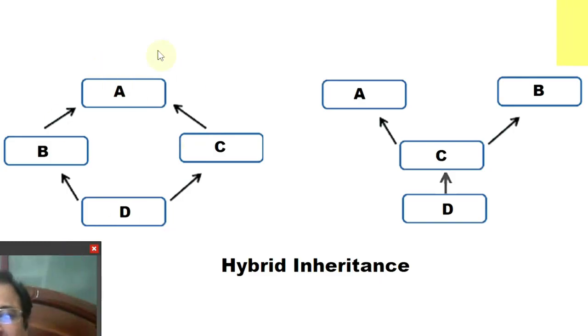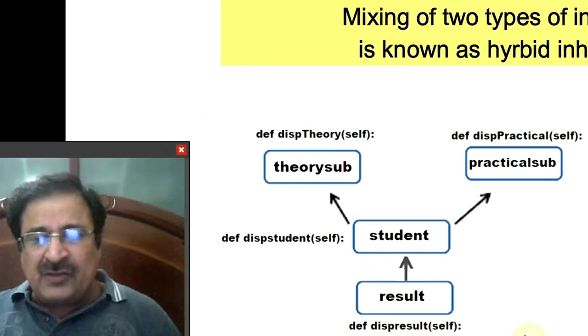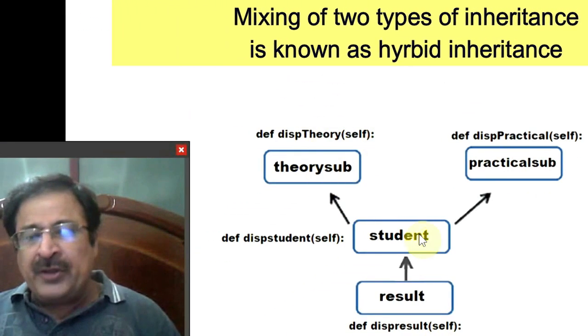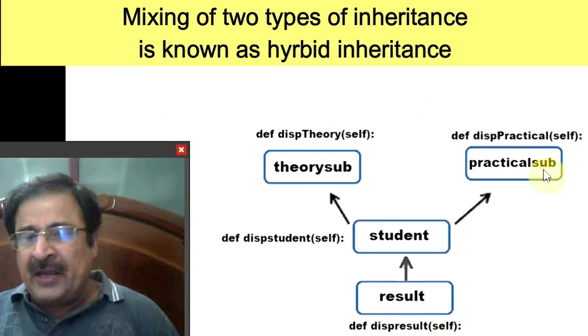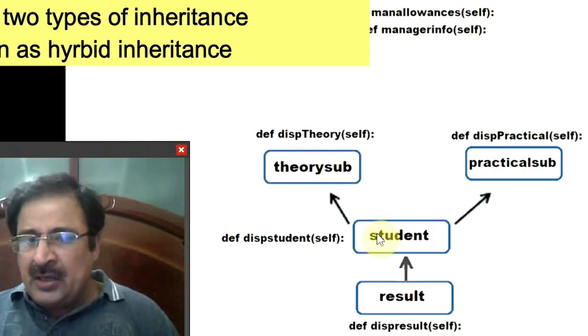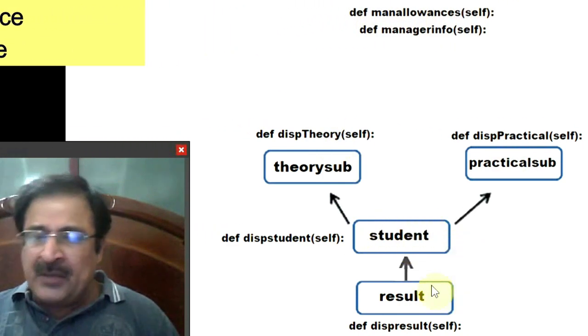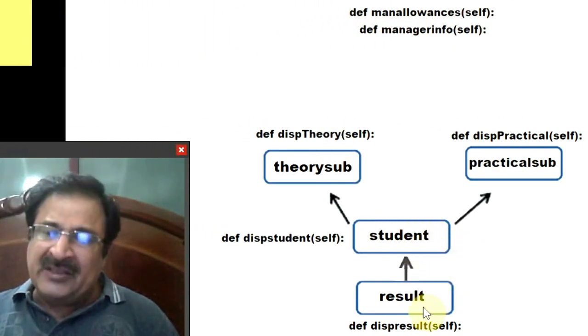These are two examples of hybrid inheritance, and this was the code being shown. Theory and Practical Sub are two independent classes. This is multiple inheritance, and this is multi-level inheritance.